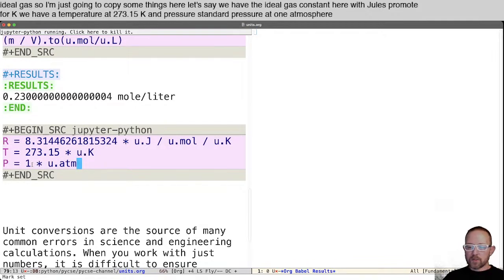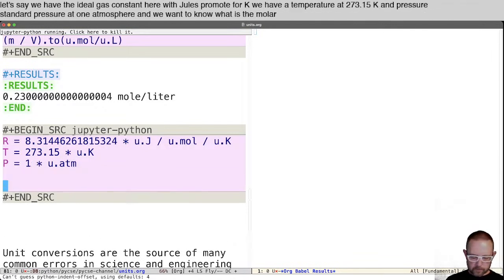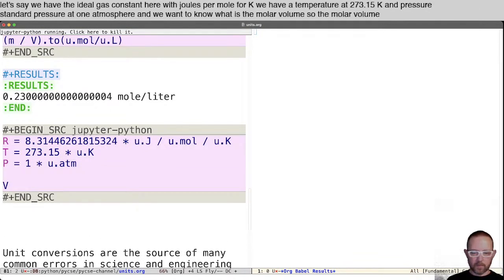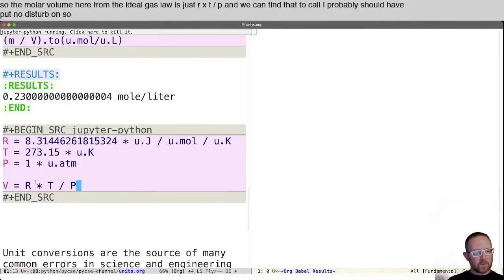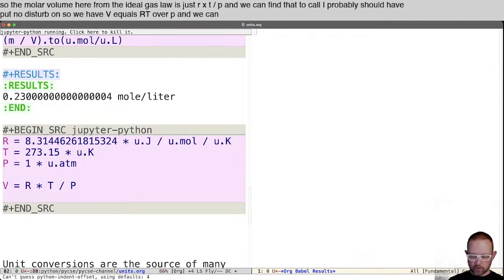So the molar volume here from the ideal gas law is just R times T divided by P. And we can define that. I probably should have put no disturb on. So we have V equals RT over P and we can also use formatting here.